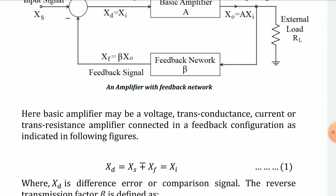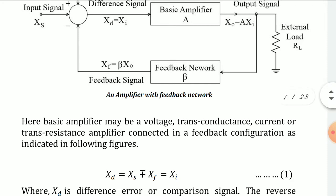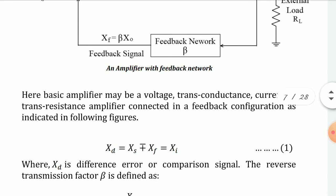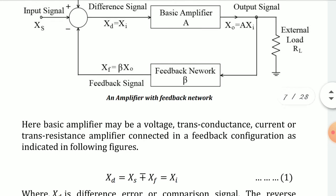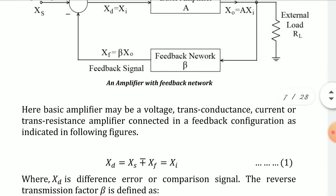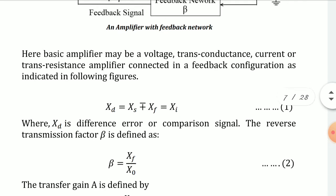The reverse transmission factor, also known as the feedback gain beta, relates the output of the feedback network X_F to its input X_O. So beta is defined as X_F divided by X_O, as per the diagram. Mark this as Equation 2.